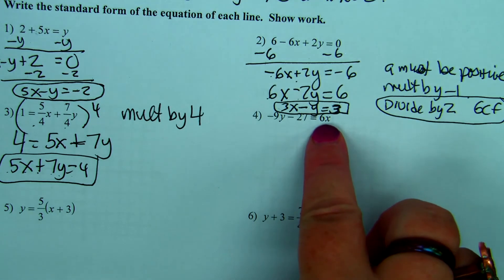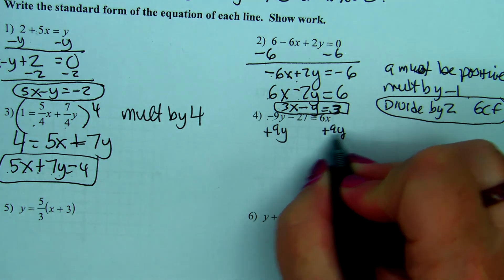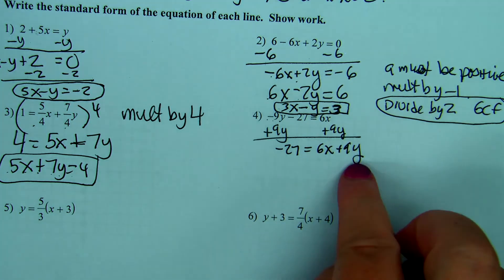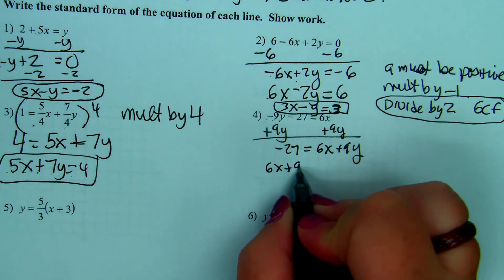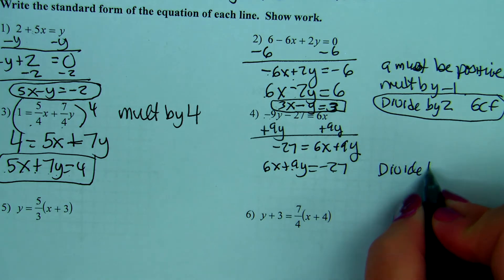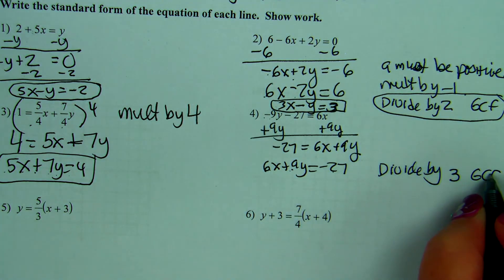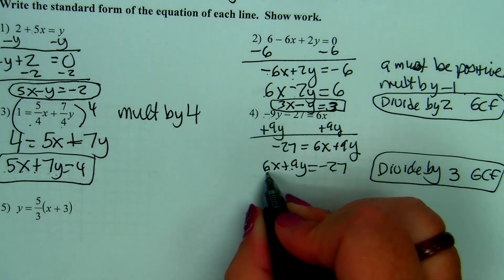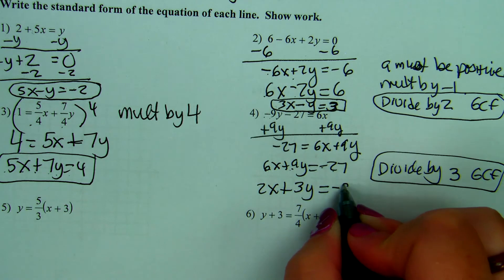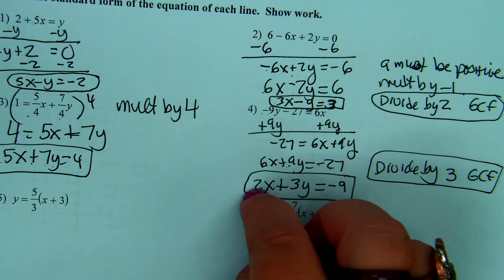This one has x by itself, so it needs the y. The opposite of negative 9y is plus 9y, giving negative 27 equals 6x plus 9y. Then we switch sides: 6x plus 9y equals negative 27. Is there a number that goes into all three? It's 3. So 6 divided by 3 is 2x, 9 divided by 3 is 3y, and negative 27 divided by 3 is negative 9. So the correct answer is 2x plus 3y equals negative 9. Without reducing you'd probably just lose half a point.